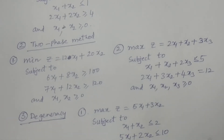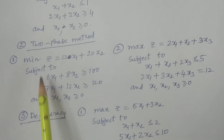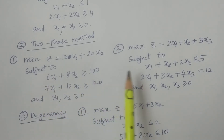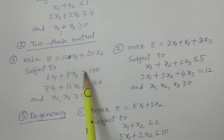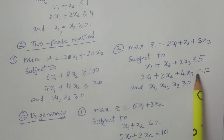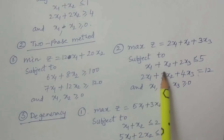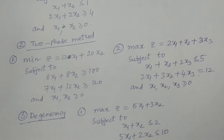Either Big M or two-phase can be used. I have suggested two more problems for the two-phase method — one minimization and one maximization. Two constraints are ≥, one constraint is ≤, and one constraint is =. Therefore you have to use either Big M or two-phase for these problems.